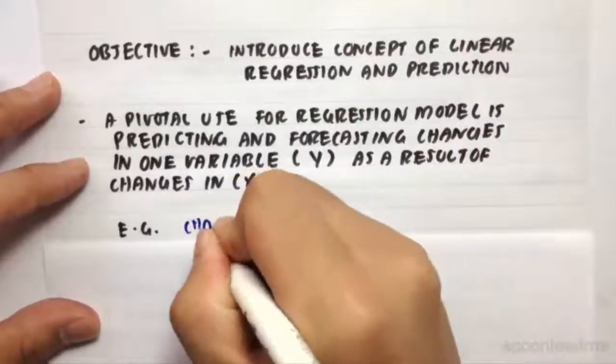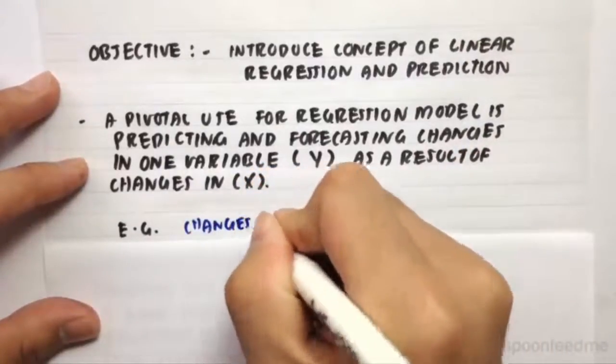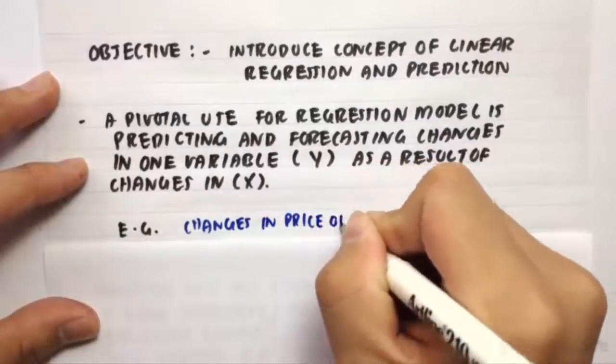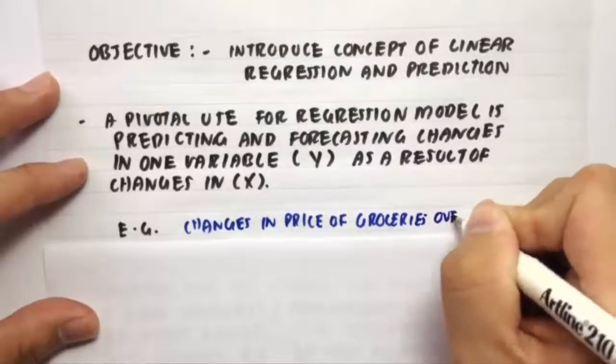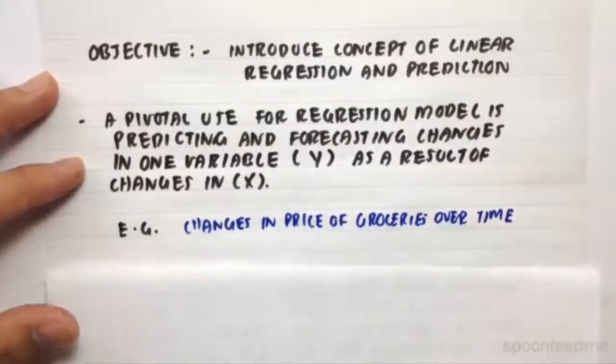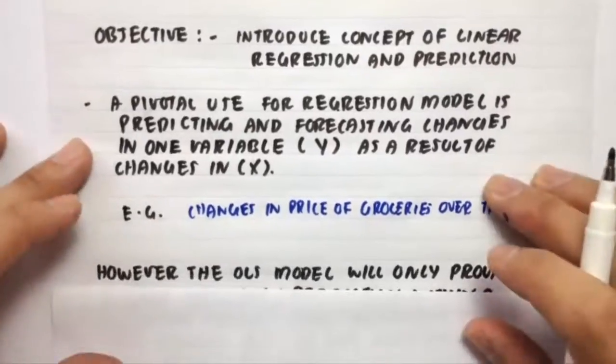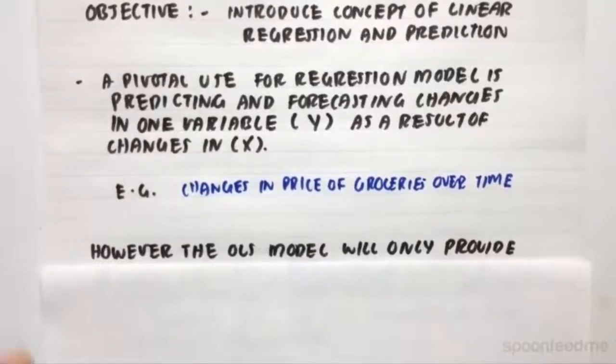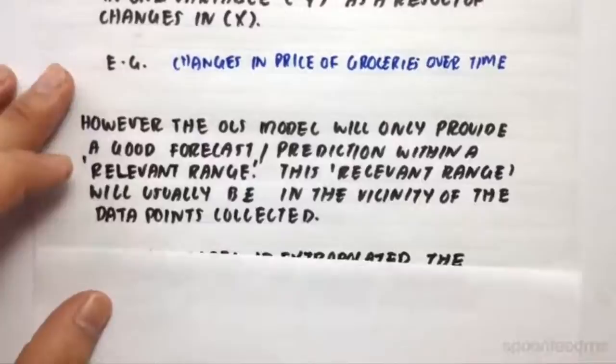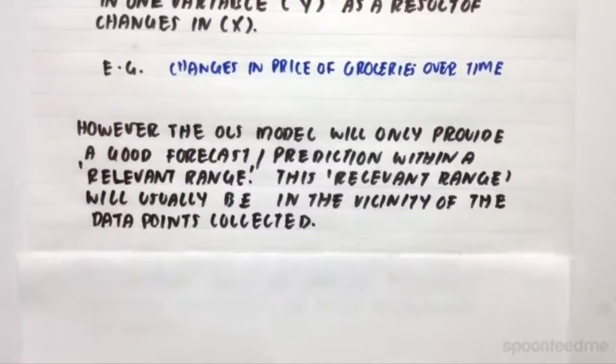For example, changes in price of groceries over time, or maybe changes in the price of housing. It's gone up over time and they want to map that out so people can see when they can actually benefit from buying houses and things like that. However, the problem is the OLS model will only provide a good forecast prediction within a relevant range. So this relevant range is usually within the vicinity of its data points collected.